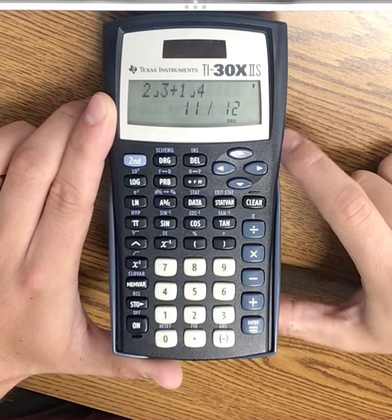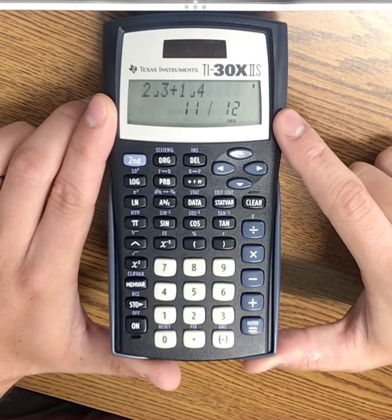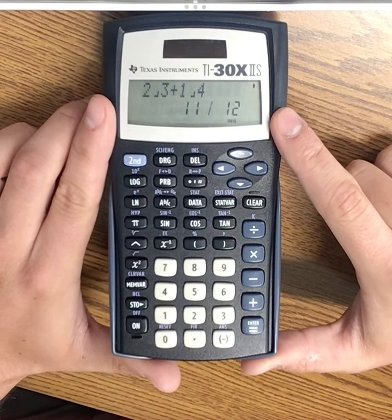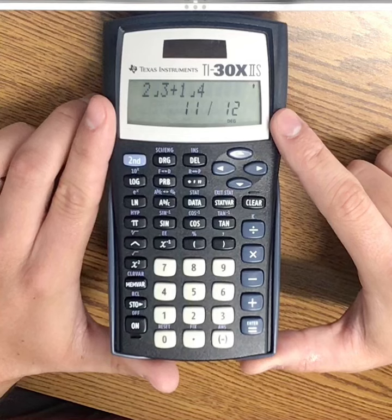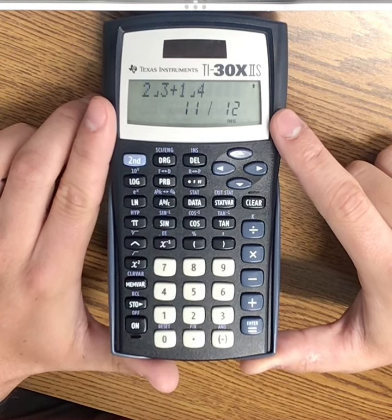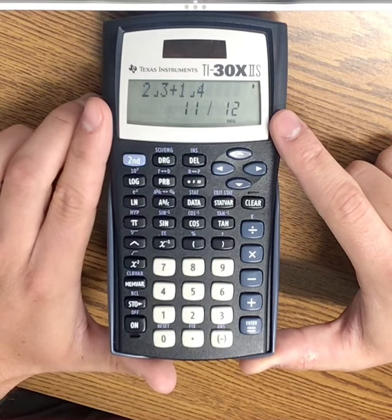If you were to do this by hand, one-fourth is equal to three-twelfths, and two-thirds is equal to eight-twelfths. So three-twelfths and eight-twelfths makes 11-twelfths.